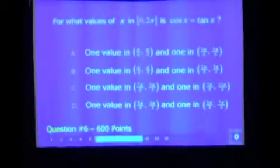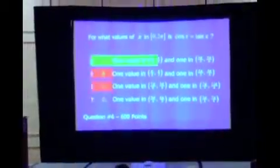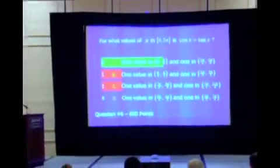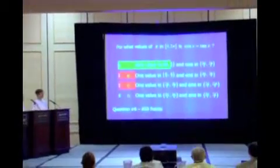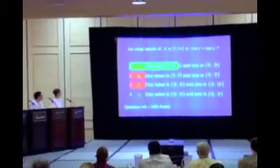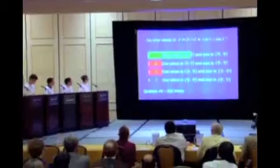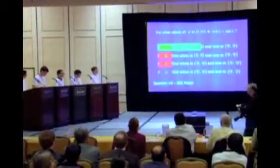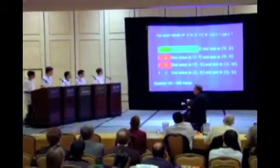Time is up for 600 points. The correct answer is 3 — three people got it right. It was A: one value in the open interval from pi over 6 to pi over 4, and one from 3 pi over 4 to 5 pi over 6.